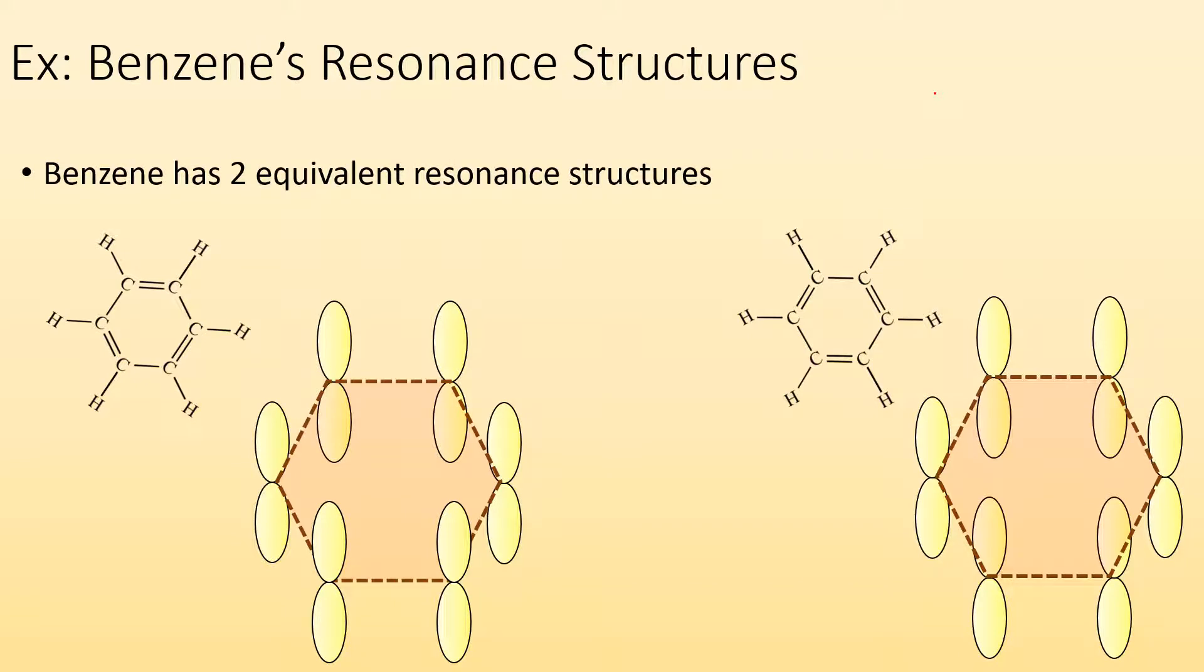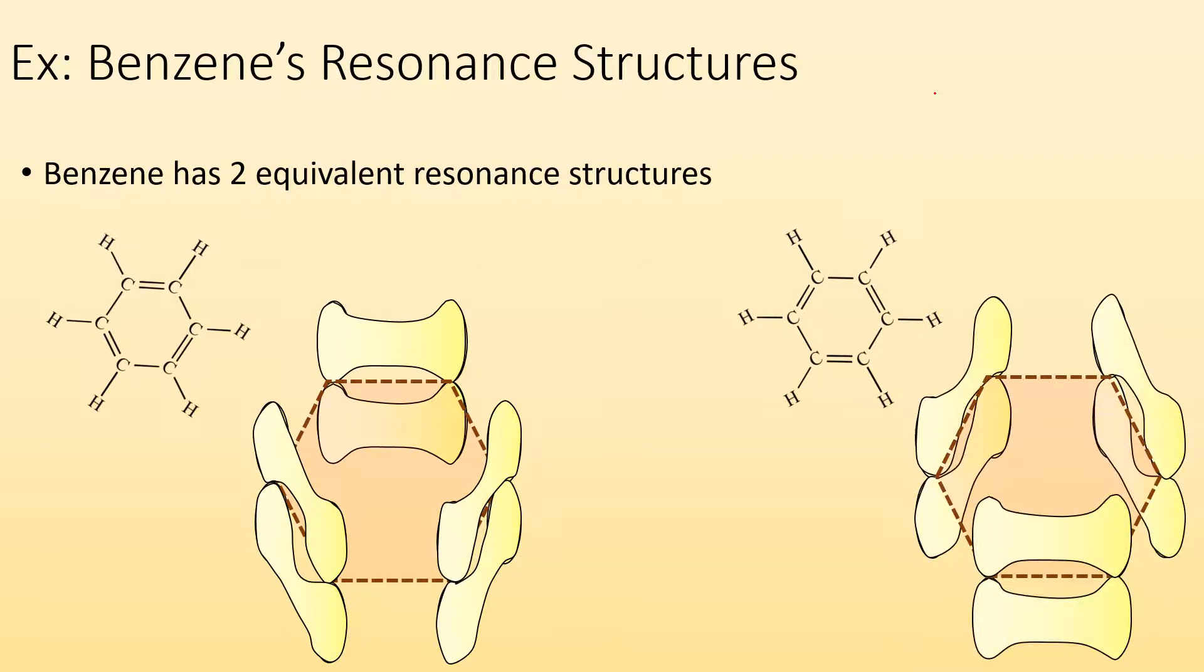We end up with two for benzene. We can have double bonds between these carbons or why can't we have them between the other carbons? We can. So we end up with these two equivalently good resonance structures on benzene.